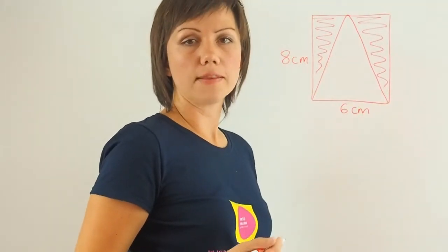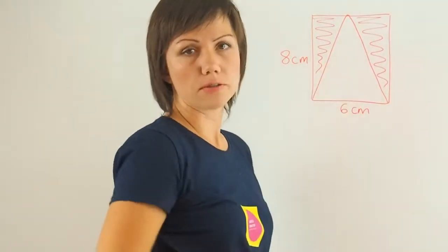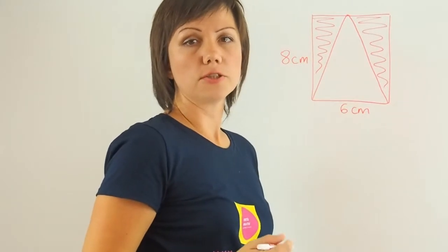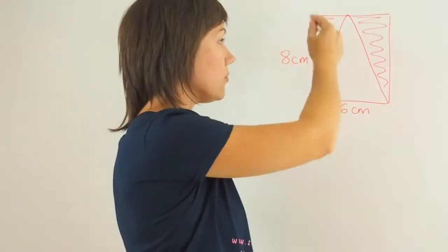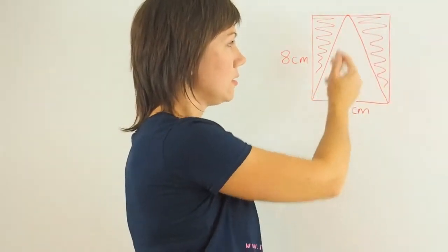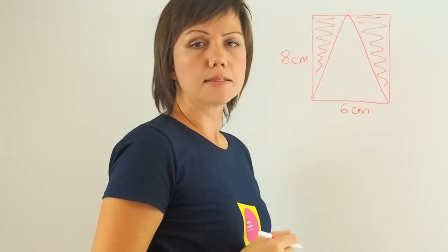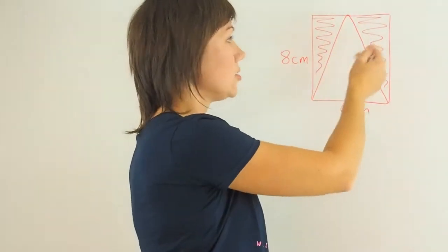In order for us to find the area of the shaded region, we need to first determine the area of the rectangle, then find the area of the triangle that's inside, and subtract the area of the triangle from the area of the rectangle to get the shaded parts.